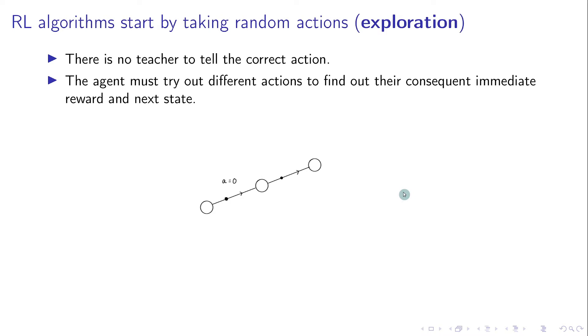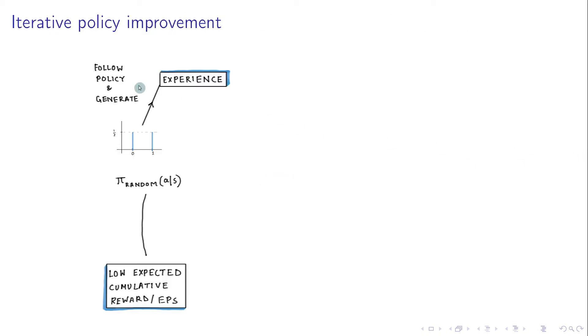During this exploration phase, the agent gathers experience. Experience is a four-tuple that contains the information that when I was in state S and took action A, I got a reward R, and landed on the next state, S'. The random policy is good at gathering such diverse experience, but it typically leads to low cumulative rewards per episode.